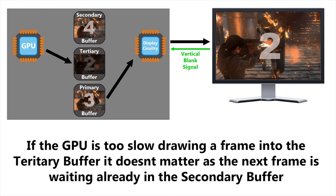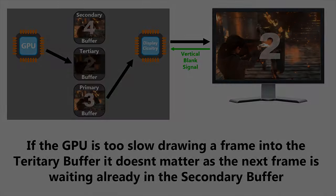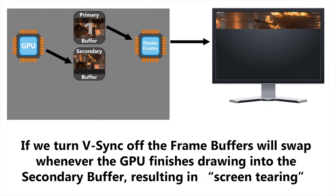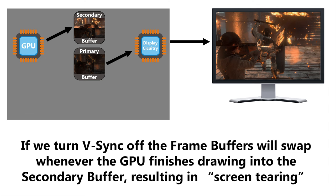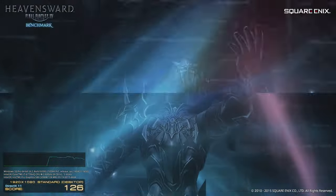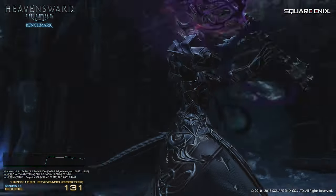So all these examples show what happens when V-Sync is turned on. How does everything work when V-Sync is turned off? We ignore the vertical blank interval sent from the monitor and swap the frame buffers whenever the GPU has finished drawing into the secondary one. In this example, the display circuitry has sent half the frame to the monitor, just as the GPU finished drawing the next frame into the secondary buffer. The buffers get switched immediately, and now the second half of what's drawn on the screen comes from that next frame, and it doesn't line up with the top half. This effect is called screen tearing. Despite the name, it doesn't damage your monitor in any way — it just looks horrible. Screen tearing occurs whenever the frame buffer swap is not synchronised with the monitor's vertical blank interval.